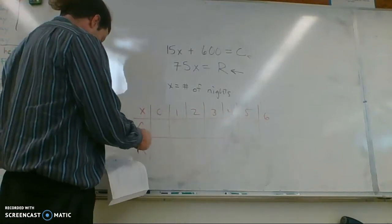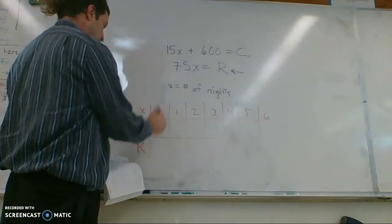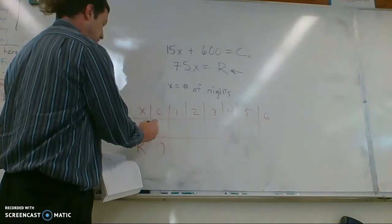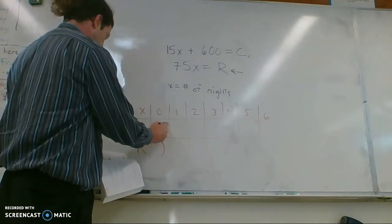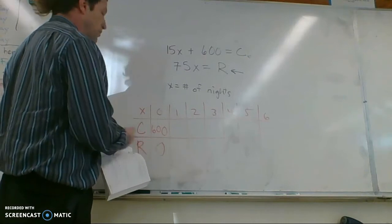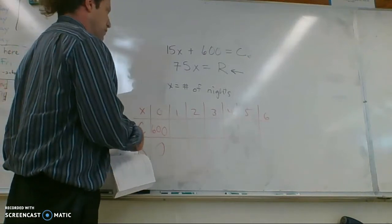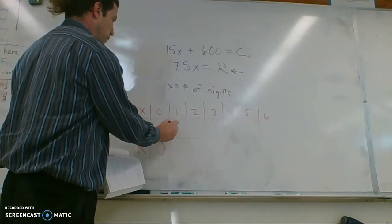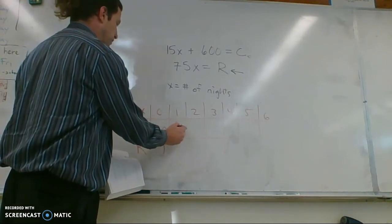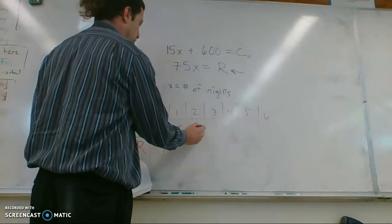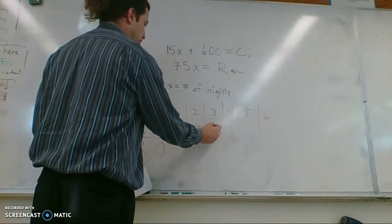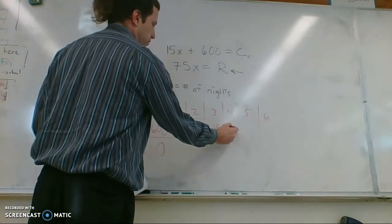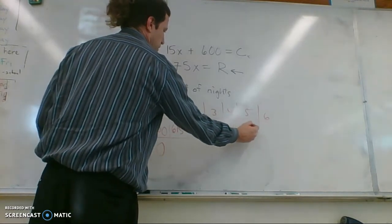This table at the bottom of page 132 illustrates how that's true. As the number of nights is zero, you make zero dollars and you spend $600 just to prepare the bedroom. But then each night, you spend an additional $15. So after one night, it'll be $615. After two nights, $630. After three nights, $645. Hey, what kind of sequence is this? I hope you said arithmetic.